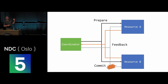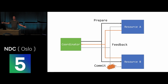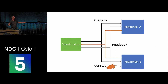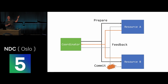The problem is that 2PC is not bulletproof. If something goes wrong in the second commit phase, resource A may have committed but resource B has not, and there's no way to undo resource A's commit. There are more robust protocols like three-phase commit, but they just add more network calls asking everyone to confirm they're okay, which adds significant overhead. All those arrows represent additional network calls required to support this behavior.